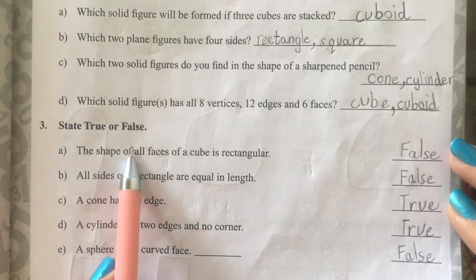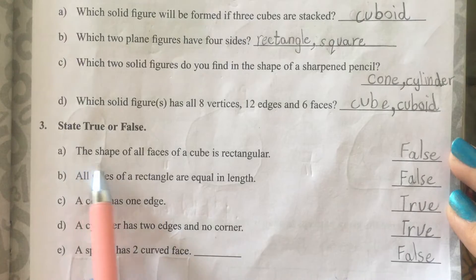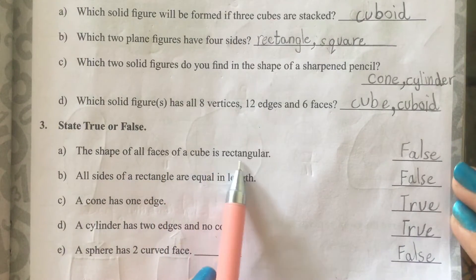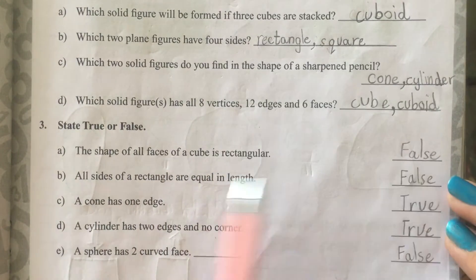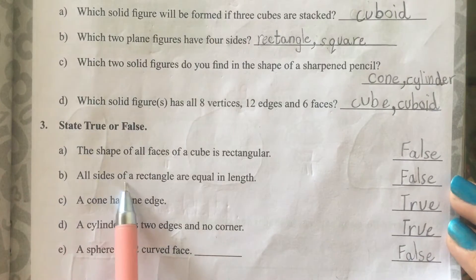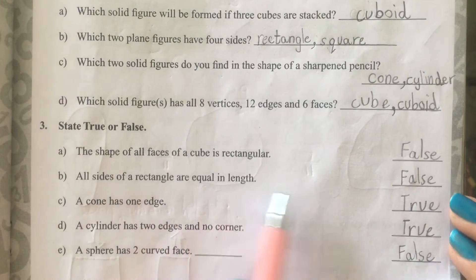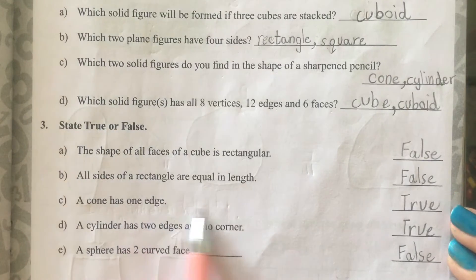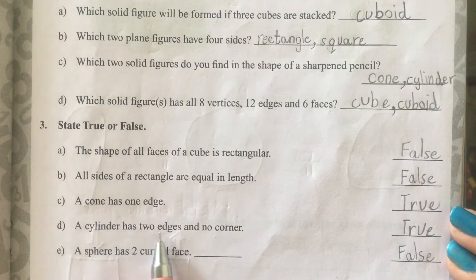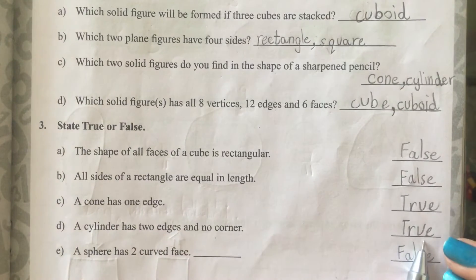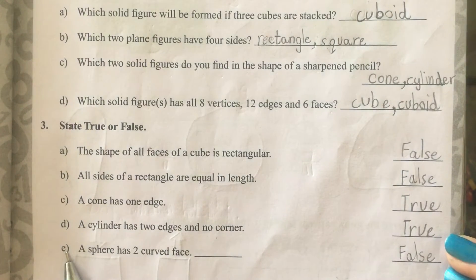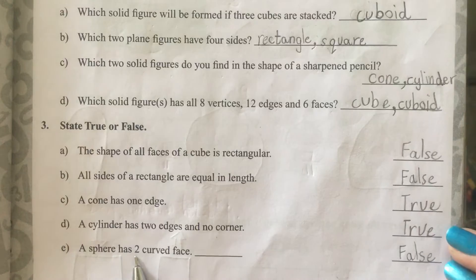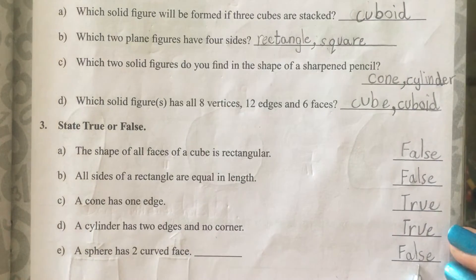State true or false. A. The shape of all faces of a cube is rectangular. False. B. All sides of a rectangle are equal in length. False. C. A cone has one edge. True. D. A cylinder has two edges and no corner. True. E. A sphere has two curved faces. False.